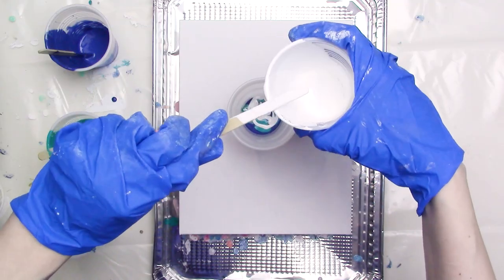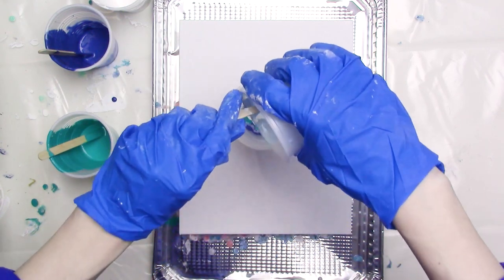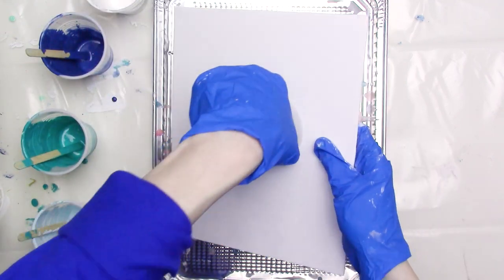I had enough paint left over for a second pour, so I'll go through the same process of layering the paint in a clean cup and using the dirty pour flip cup technique on the canvas panel.